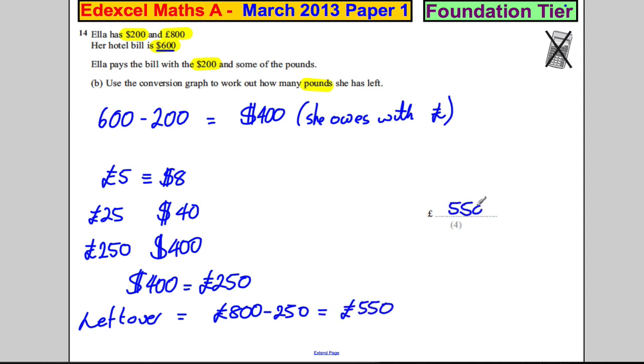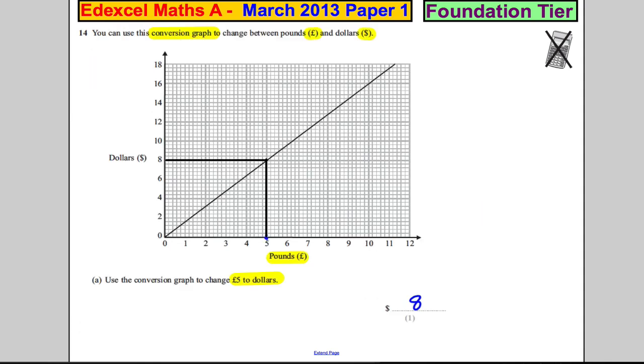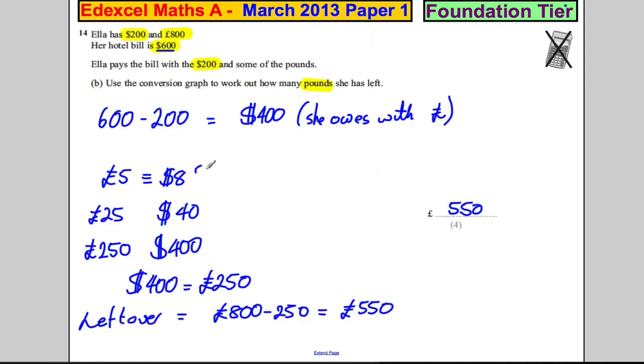For me, the key to this question was just to get started. Obviously you know 400 dollars is left after she's paid with her 200 dollars. Then think about why did they ask part A - that's useful information, really handy to be able to work out an easy conversion for you. And we're done.